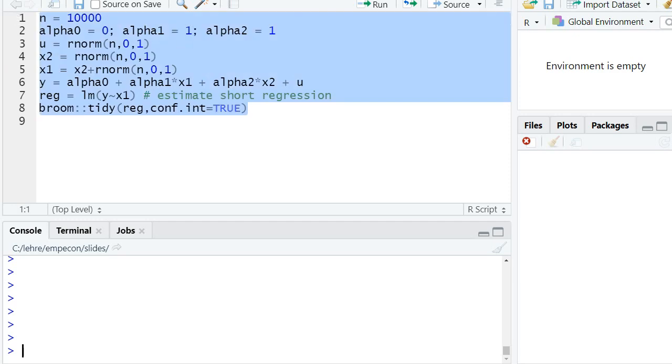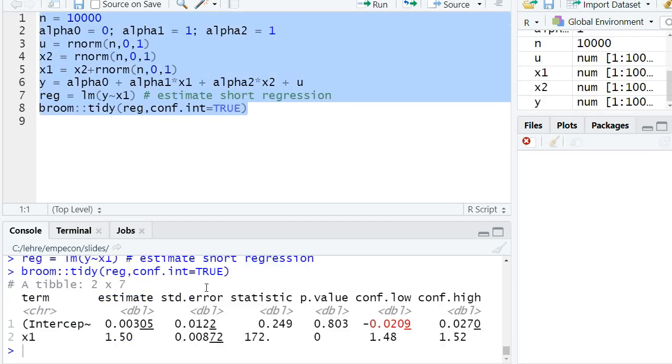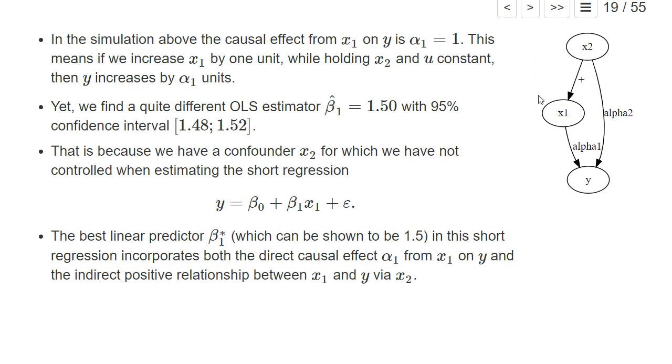Okay, let's run our whole simulation in R and look at the result. We find an estimate in front of x1 in our short regression, where we omit this explanatory variable x2, of 1.5. The 95% confidence interval is between 1.48 and 1.52, so the confidence interval is far away from the true causal effect α₁, which is equal to one.